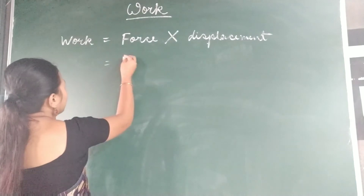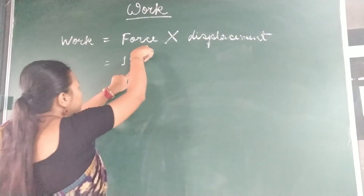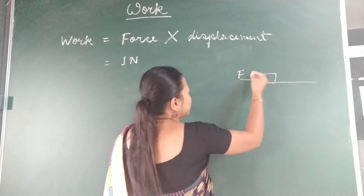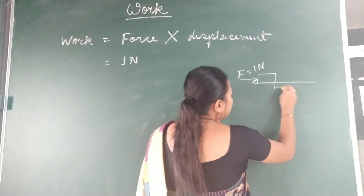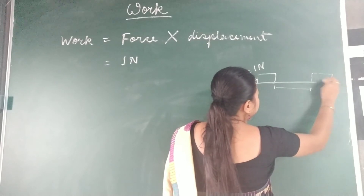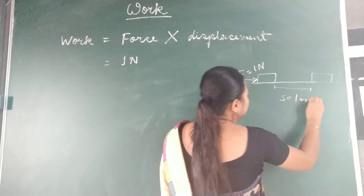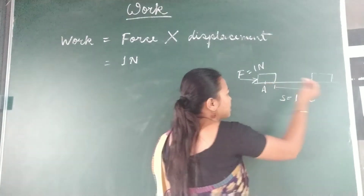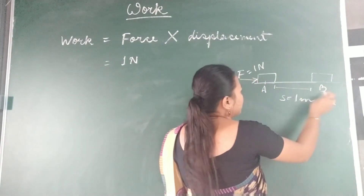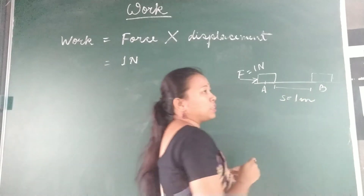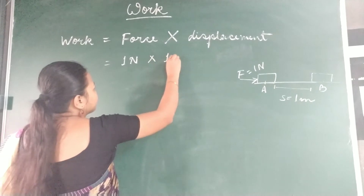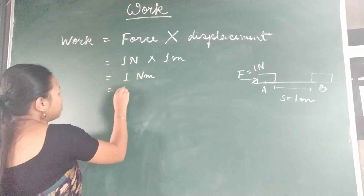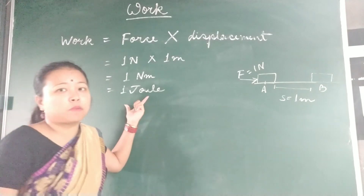When one Newton of force is applied on an object and as a result the displacement seen is one meter, then we can say that one Newton into one meter equals one Newton meter, that is, one Joule. So I hope you have got the concept of one Joule.